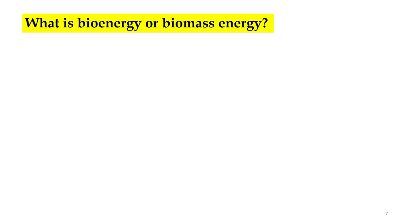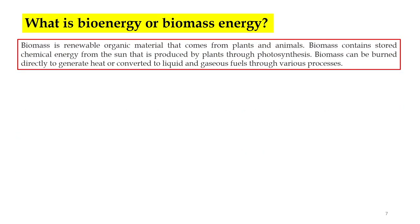Let us learn what is bioenergy or biomass energy. Biomass is renewable organic material that comes from plants and animals. Biomass contains stored chemical energy from the sun, produced by plants through photosynthesis. Biomass can be burned directly to generate heat or converted to liquid or gaseous fuels through various processes, which we will be studying and elaborating for the generation of electricity.